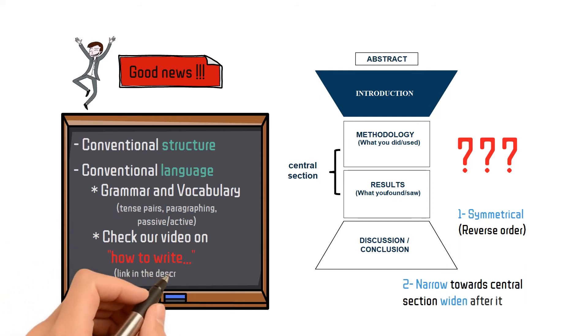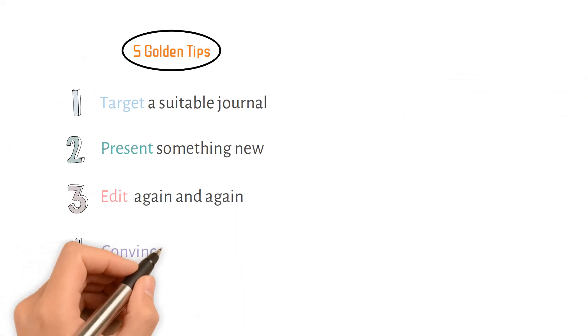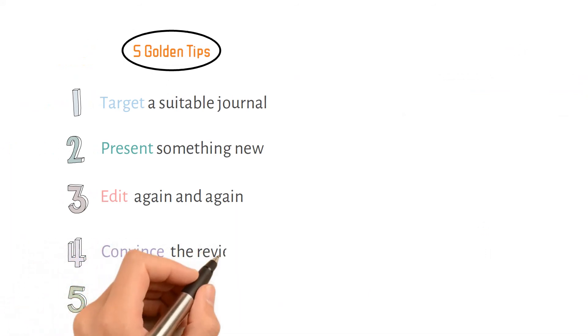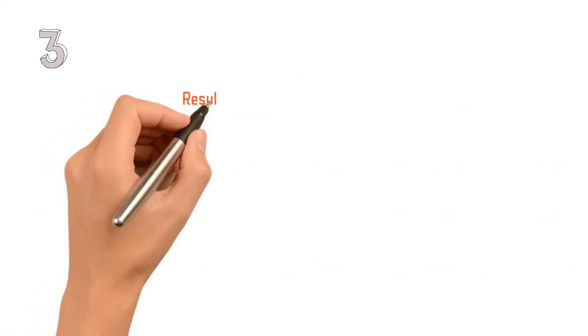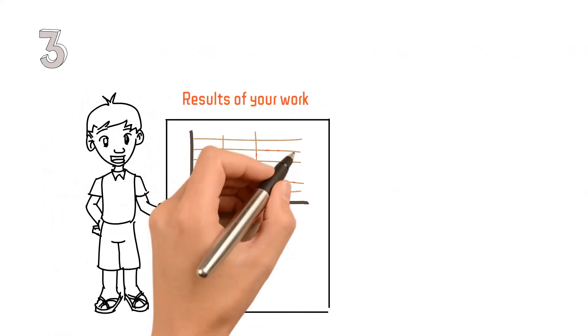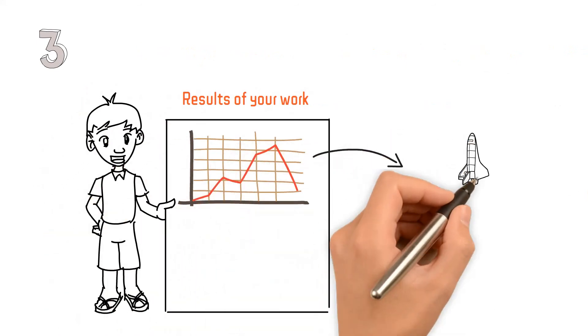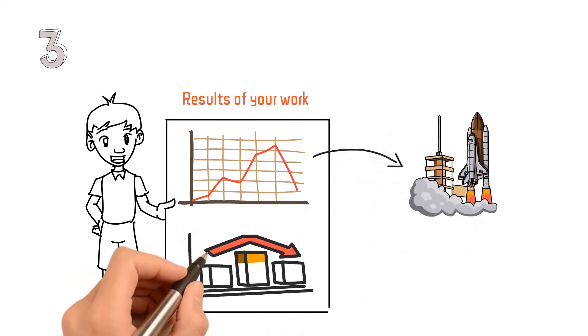The fourth point is to convince the reviewers. This mainly depends on how you present your methodology and results section. For example, while presenting the results of your work, do not merely describe what's obvious from the graph or diagrams.